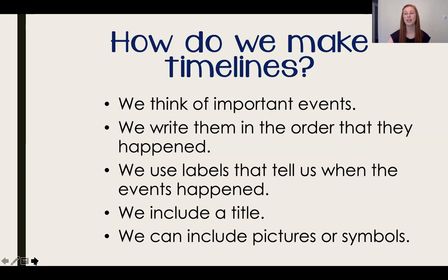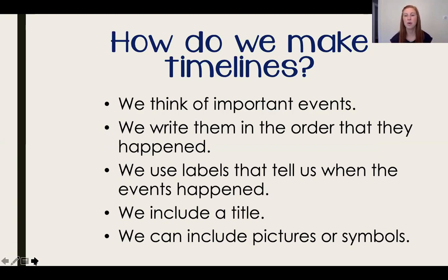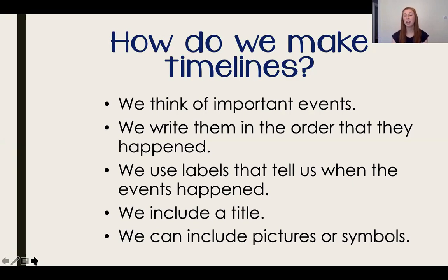So this week, you are going to be making your own timeline. Let's think about how we make timelines. We need to think of important events and write them in the order that they happened. Then we're going to use labels — those are the years that tell us when the events happened. We're also going to include a title and pictures or symbols. So I made my own timeline — let's look at it.